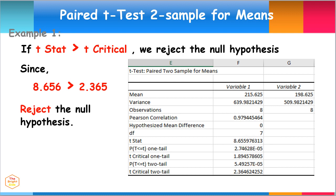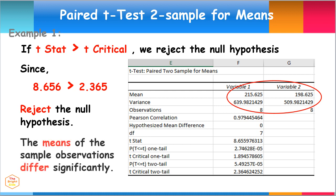This means the observed mean difference between 215.625 and 198.625 is convincing enough to say that the average weights of clients before and after the program differs significantly. We can conclude that the means of the paired sample observations differ significantly.